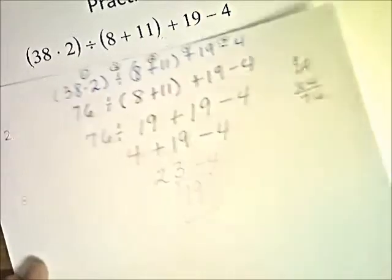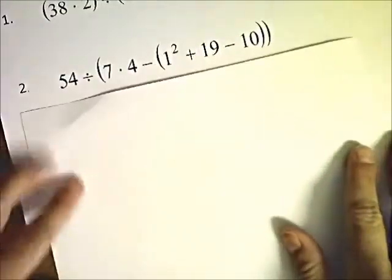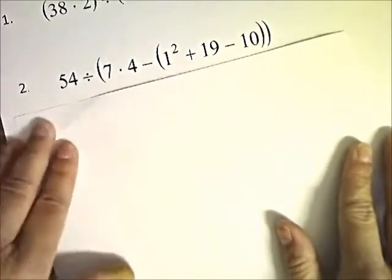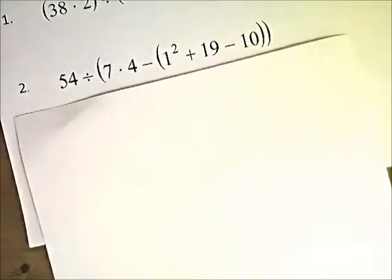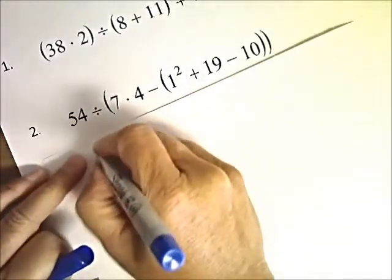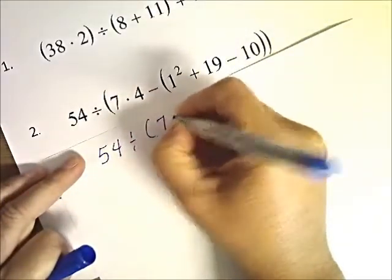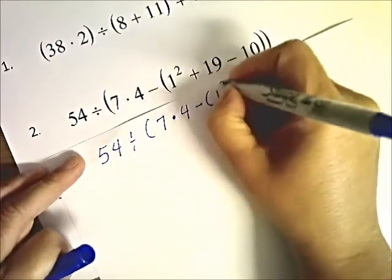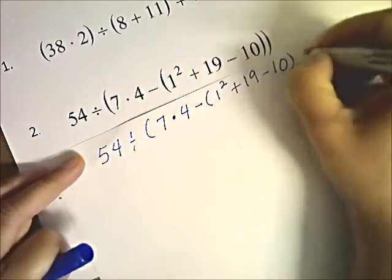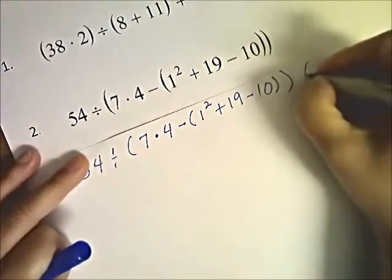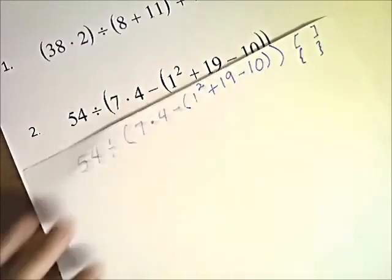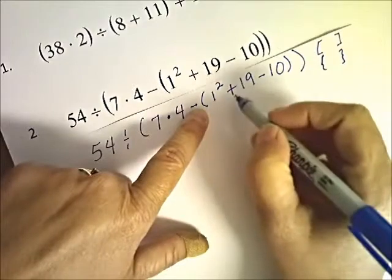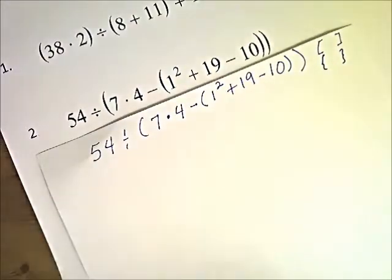Now let's try a harder problem — look at all those parentheses. This is something students often ask: which one do I do first? You do the innermost parentheses. This one's the outer parenthesis; these are the inner parentheses. So we have: 54 divided by 7 times 4 — that part is in parentheses — and then parenthesis 1 squared plus 19 minus 10, parenthesis, parenthesis. You might also see these as brackets, but they're just other ways to write parentheses.